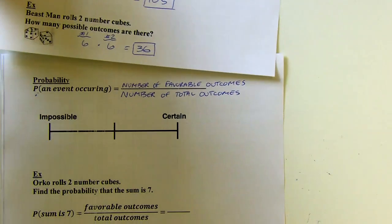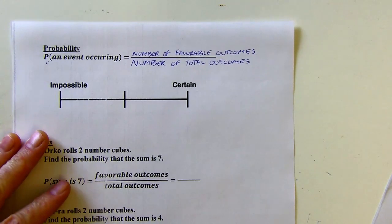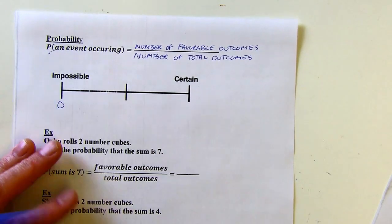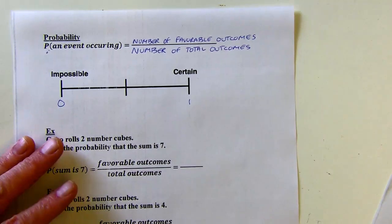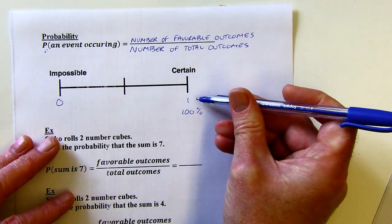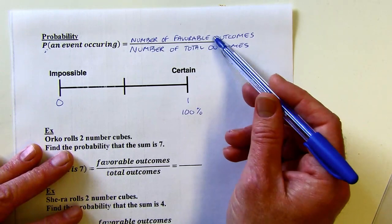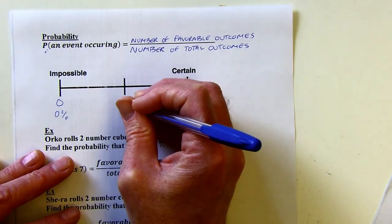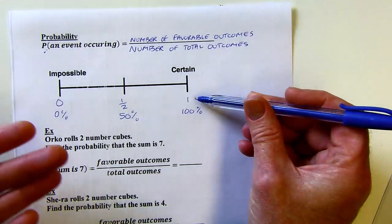Certain things are impossible and other things are certain. On a scale of probability, an impossible event has a probability of zero, which makes sense. If something is certain, the probability is 1. You might think it should be 100%, and yes, it can be written as 100%, but in fraction form it's 1 — for example, 3 out of 3 equals 1. A probability of one-half means a 50% chance — it's going to happen 1 out of 2 times, while a probability of 1 means it happens every time.